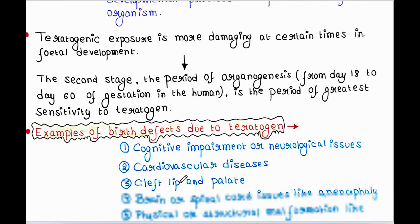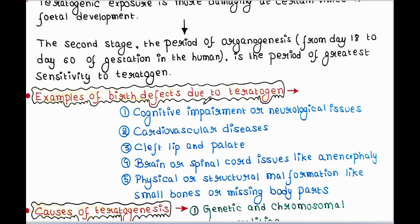We will see some examples of birth defects due to teratogens: cognitive impairment or neurological issues, cardiovascular diseases, cleft lip and palate, brain or spinal cord issues like anencephaly, and physical or structural malformations like small bones or missing body parts.